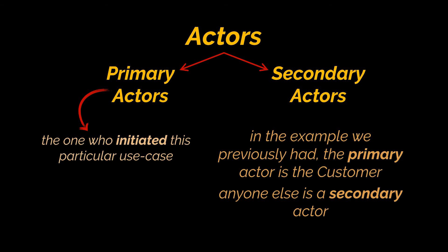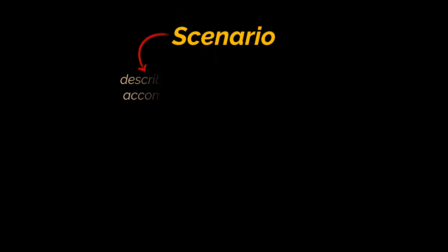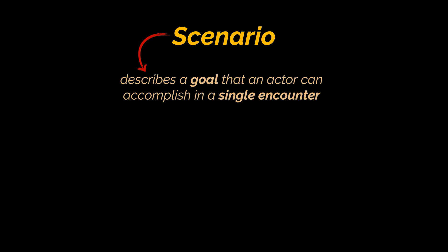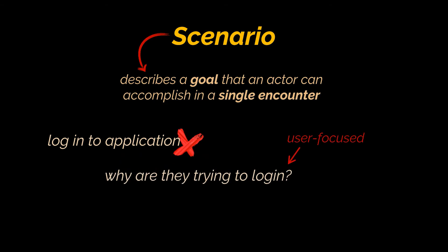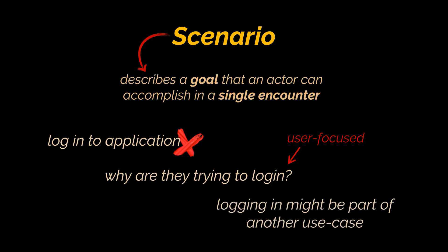When describing a use case scenario, we're focused on a goal an actor can accomplish in a single encounter, staying focused on the user's goal and intention. For example, "login to application" might first sound like a use case — it has an active verb and multiple steps — but if we emphasize the user's goal, we realize they don't want to simply log in. The reason they log in is to do something, such as purchase items or check their account balance. Logging in may be part of a use case, but it's not a use case on its own.